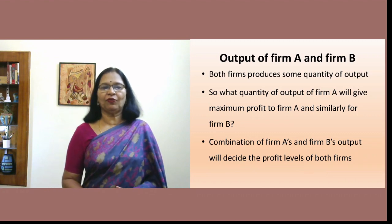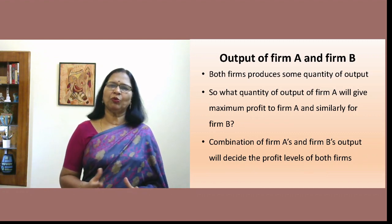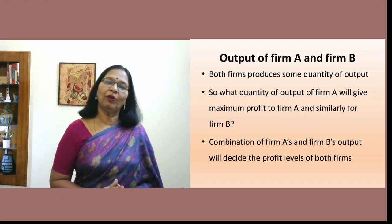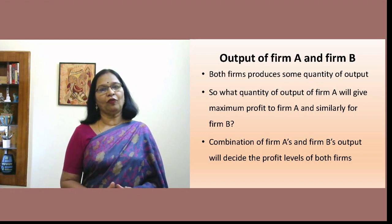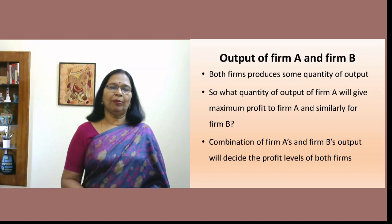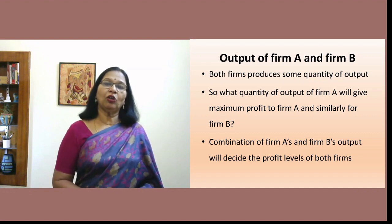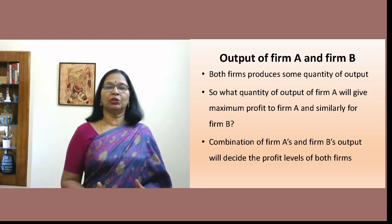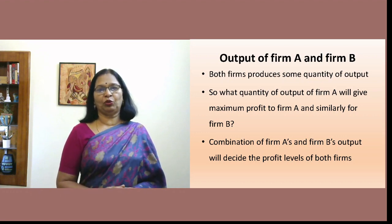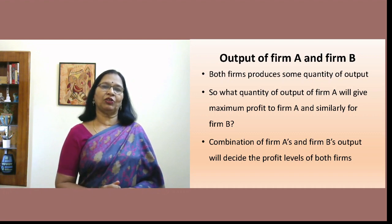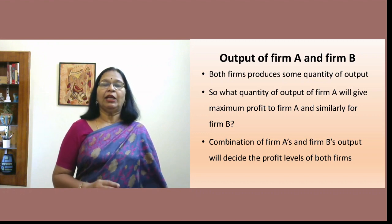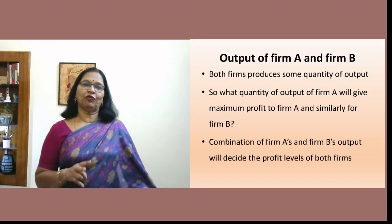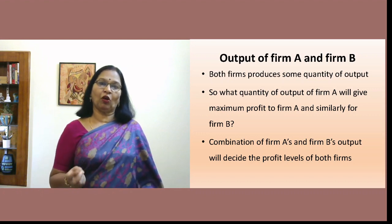Assume we have two firms, firm A and firm B, both producing some quantity of output. The question is what level of output firm A should produce to get maximum profit, and what quantity firm B should produce for its maximum profit. The combination of both firms' outputs determines their profit levels — individual output levels alone cannot determine profit, unlike in monopoly or monopolistic competition. The output of both firms must be considered before deciding the profit of either firm.